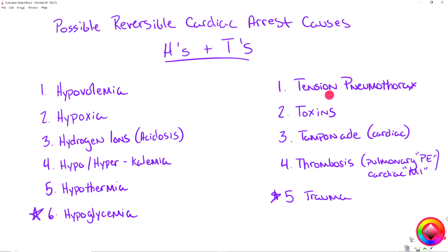Ask your medic if there's a tension pneumo and needle decompress the patient. Toxins — when thinking toxins, we're thinking everything that could be toxic to the body: organophosphates, overdoses, a bee sting that might cause an allergic reaction — anything that could be a toxin within the body to cause cardiac arrest.